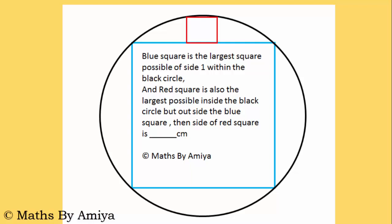The question is in front of us. A blue square is the largest square possible of side 1 within the black circle. And the red square is also the largest possible square inside the black circle, but outside the blue square. The side of the red square is how much? Okay, so let's start the question.